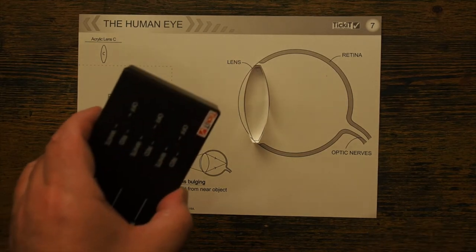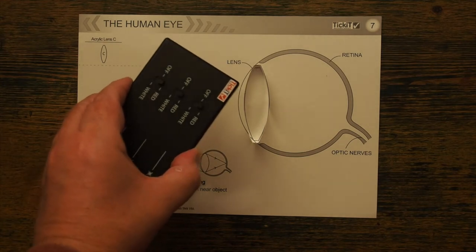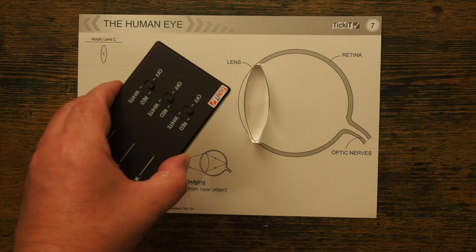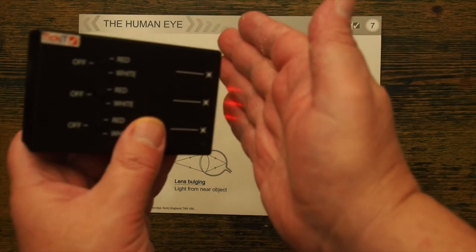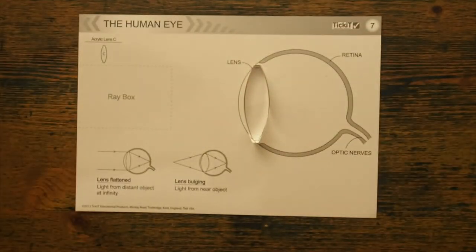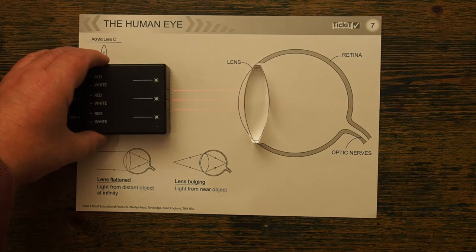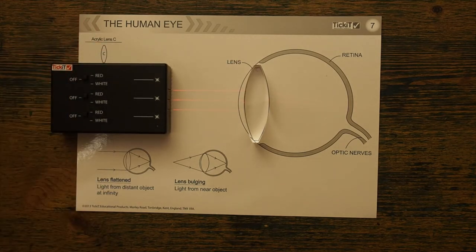To show the light travelling into the eye I'm using this ray box here, which has three lights, and I've set all of the lights to red, which you can just about see. If I place the ray box into its setting here, that makes it really quite hard to see, so I'm going to turn this light off for a moment.